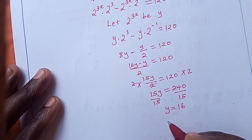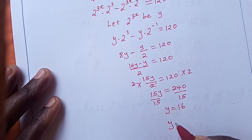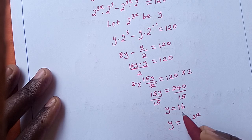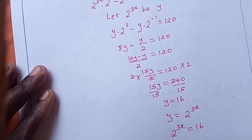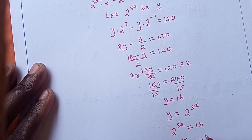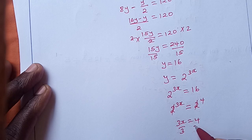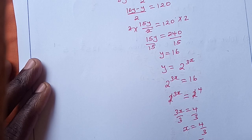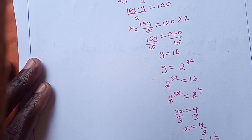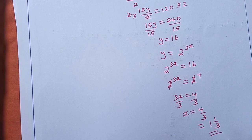Since y equals 2 raised to 3x, and y is 16, we have 2 raised to 3x equals 16. Writing 16 as a power of 2: 2 raised to 3x equals 2 raised to 4. The bases cancel, giving 3x equals 4. Dividing by 3, x equals 4 over 3, which is 1 and 1 third. Thank you for watching. If you are new, please subscribe and share this video widely.